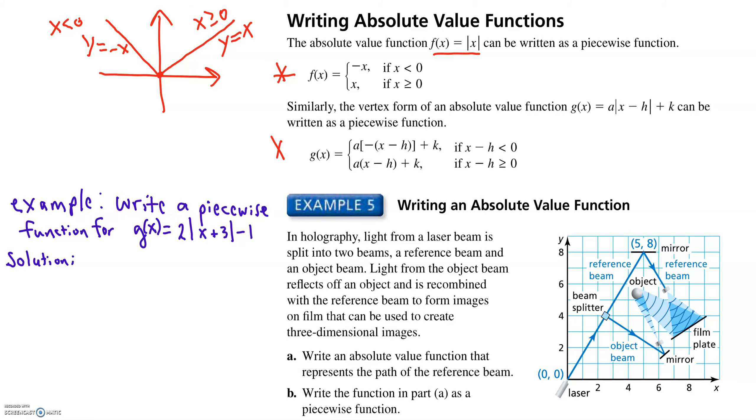We can similarly do the same thing for other absolute value functions, but the change for these guys, the switch is when x minus h equals 0. So if x minus h is less than 0, in other words, if x is less than h,